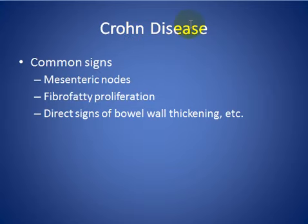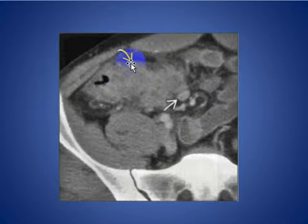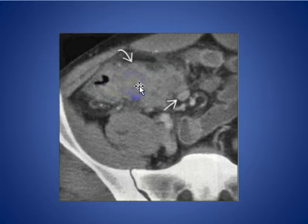Crohn's disease: common signs include mesenteric lymph nodes, fibro-fatty proliferation, and direct signs such as bowel wall thickening. As seen here in this patient with Crohn's disease: thick-walled terminal ileum with surrounding inflammation associated with multiple small mesenteric lymphadenopathy.